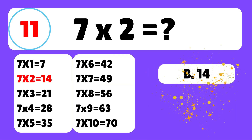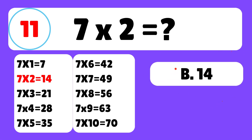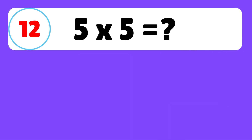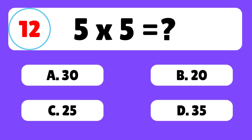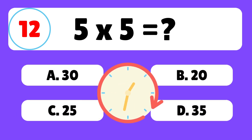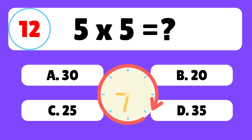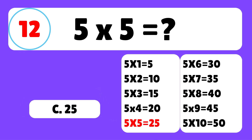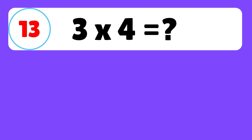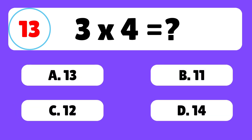Question eleven: what is seven times two? The answer is B — seven times two is equal to fourteen. Question twelve: what is five times five? The answer is C — five times five is equal to twenty-five.